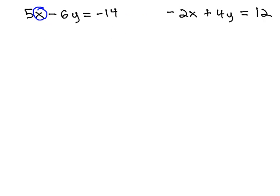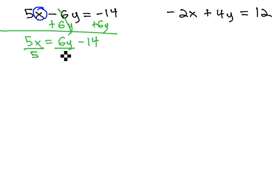I'm going to move the second equation out of the way for now. So, if we want to get that x alone, we have to add 6y to both sides. Gives us 5x equals 6y minus 14, or negative 14 plus 6y is the same thing. And to get x alone, we divide each term by 5, and we end up with these fractions. x is equal to 6 fifths y minus 14 fifths.